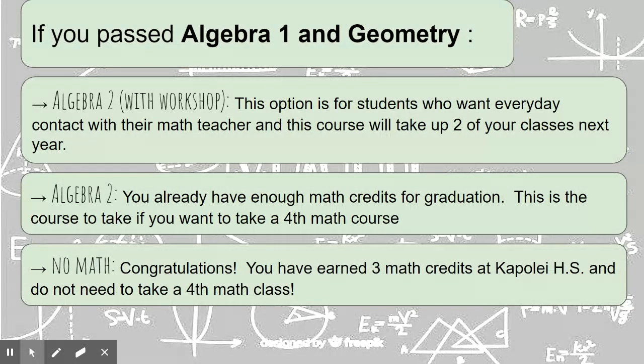Or you could take no math because you have three math credits, and you're not required to take another math course and can graduate with three math credits. The other two options are, like they say, options.